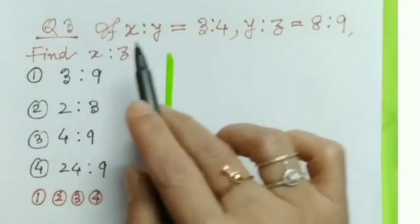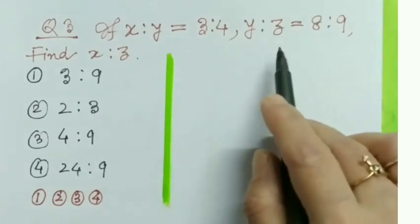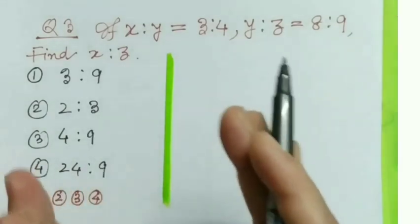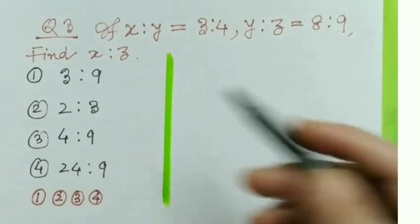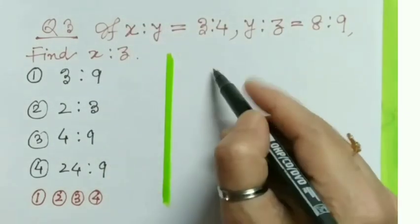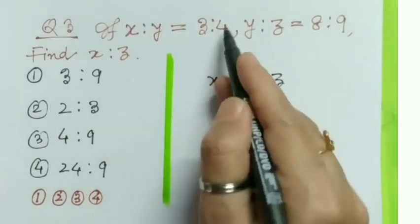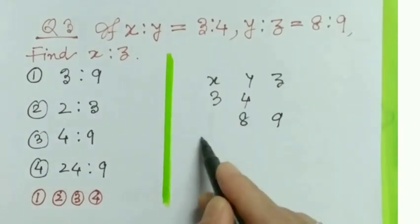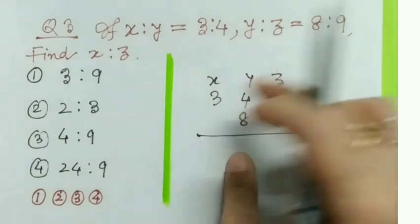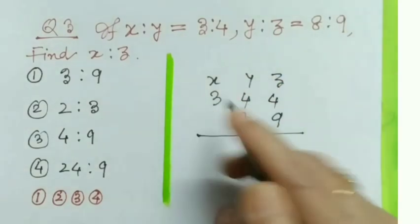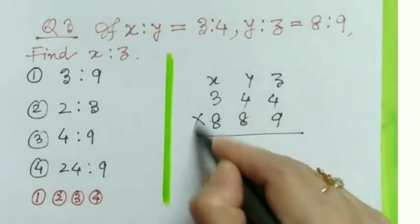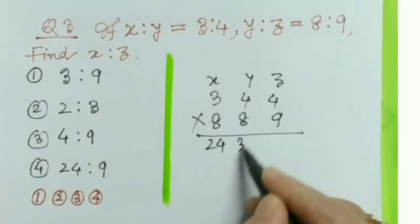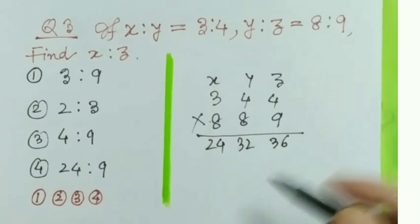Question 3: If x is to y equals 3 is to 4, and y is to z equals 8 is to 9, find x is to z. I'm writing x, y, z in a grid. x:y is 3:4, and in the next line y:z is 8:9. Now I fill the vacant places — this one with 4 and this one with 8.